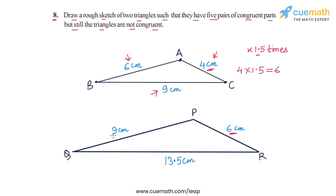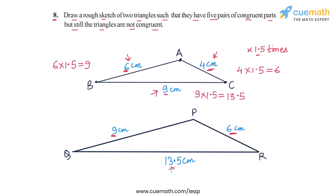Side PQ is 9 cm because AB was 6 cm and 6 × 1.5 = 9, so the side length of 6 cm became 9 cm when scaled up. Then QR is 13.5 cm because BC was 9 cm and 9 × 1.5 = 13.5, so BC when scaled up became 13.5 cm.